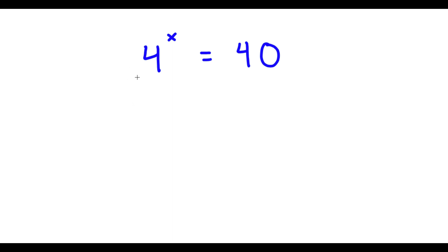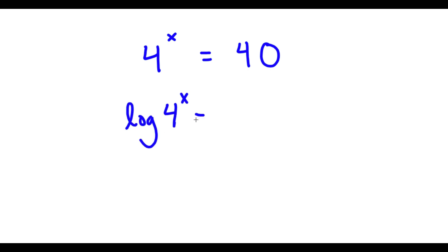In this problem, I have 4 to the power of x is equal to 40. To solve this, I'm going to first start by taking the log on both sides. So now I have log 4 to the power of x is equal to log 40.